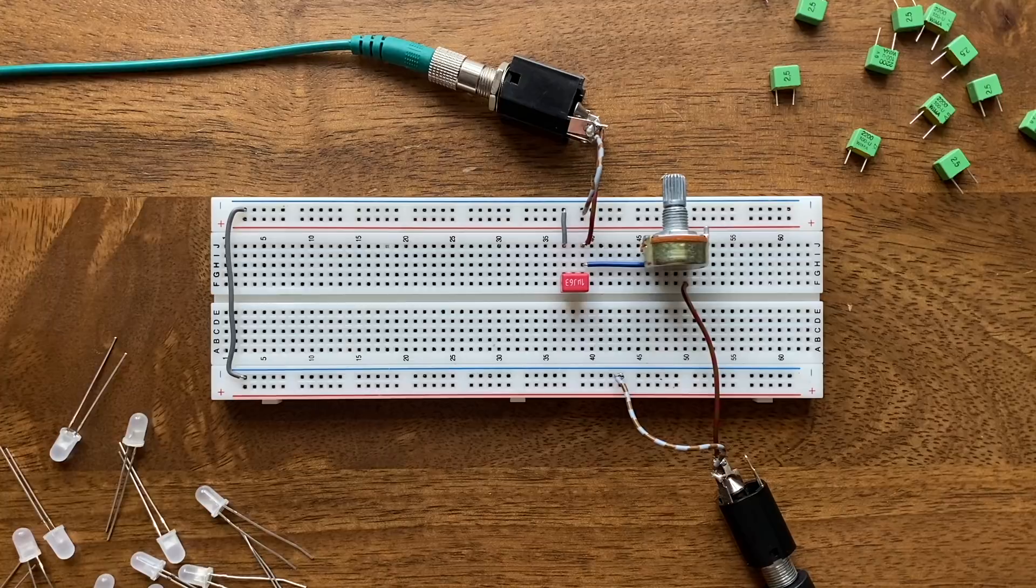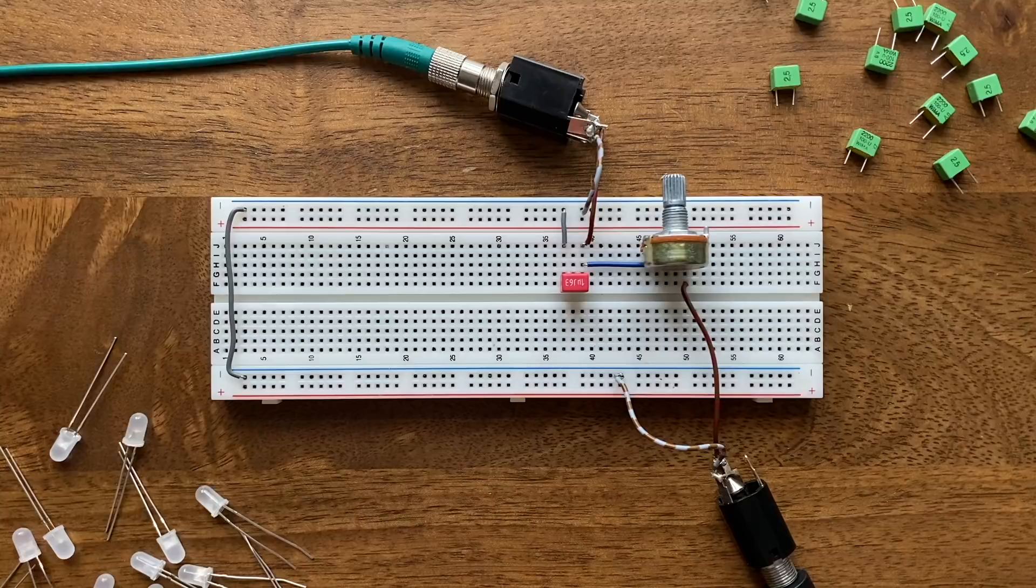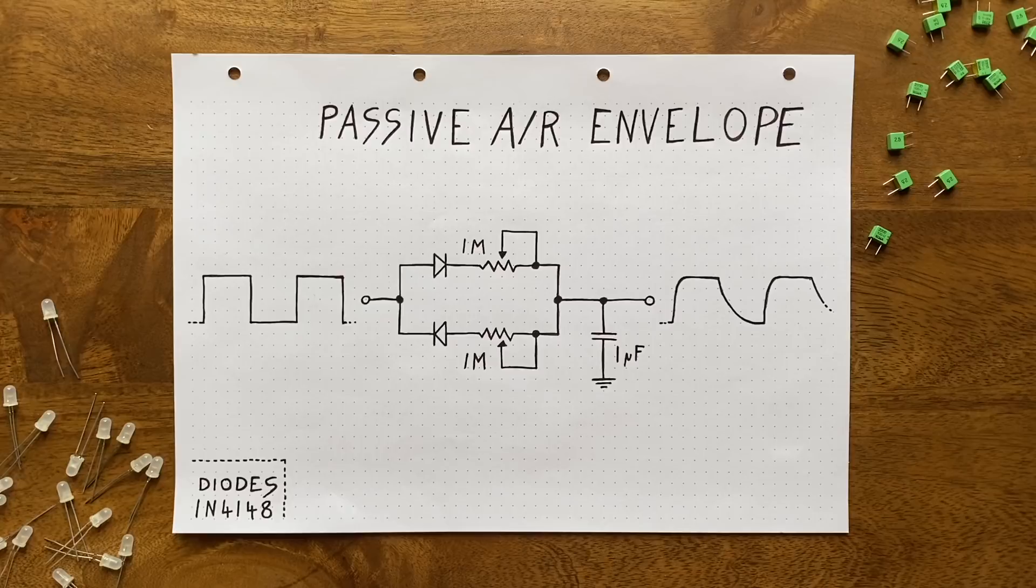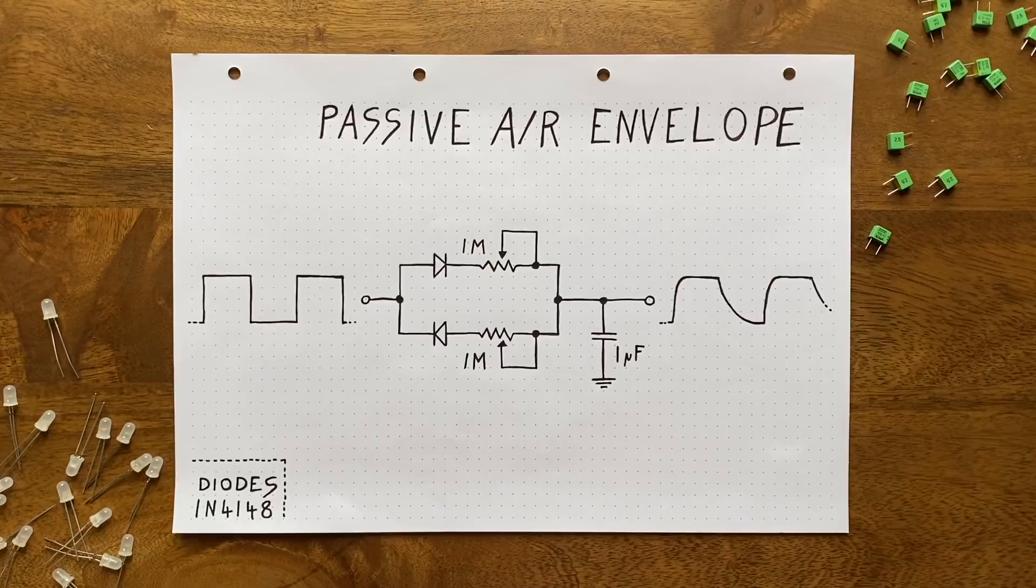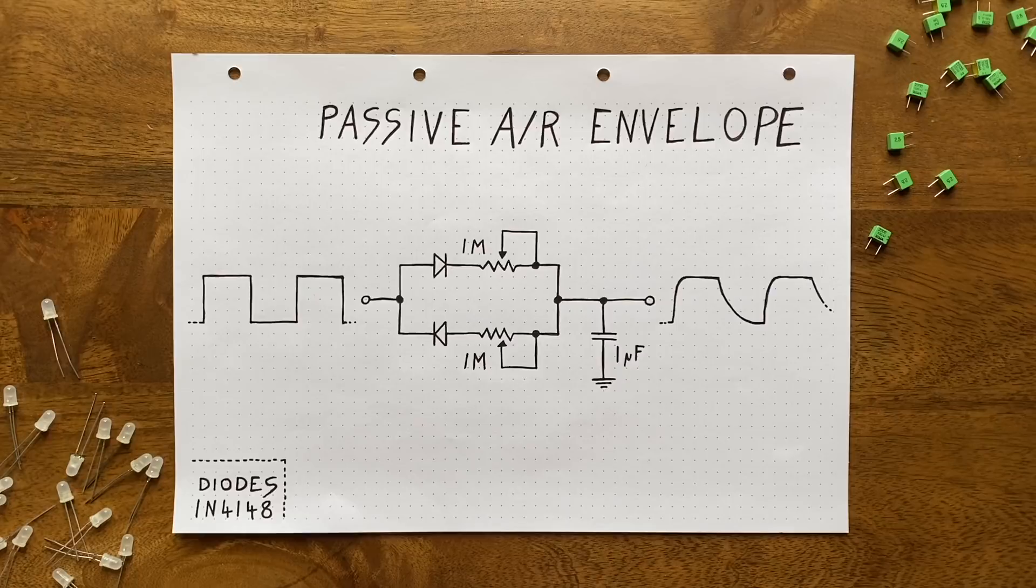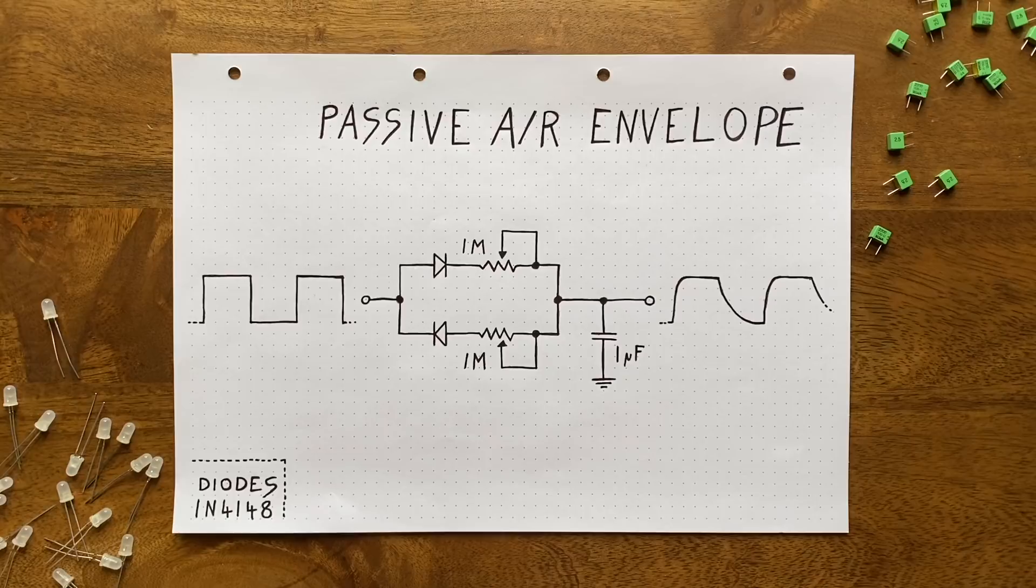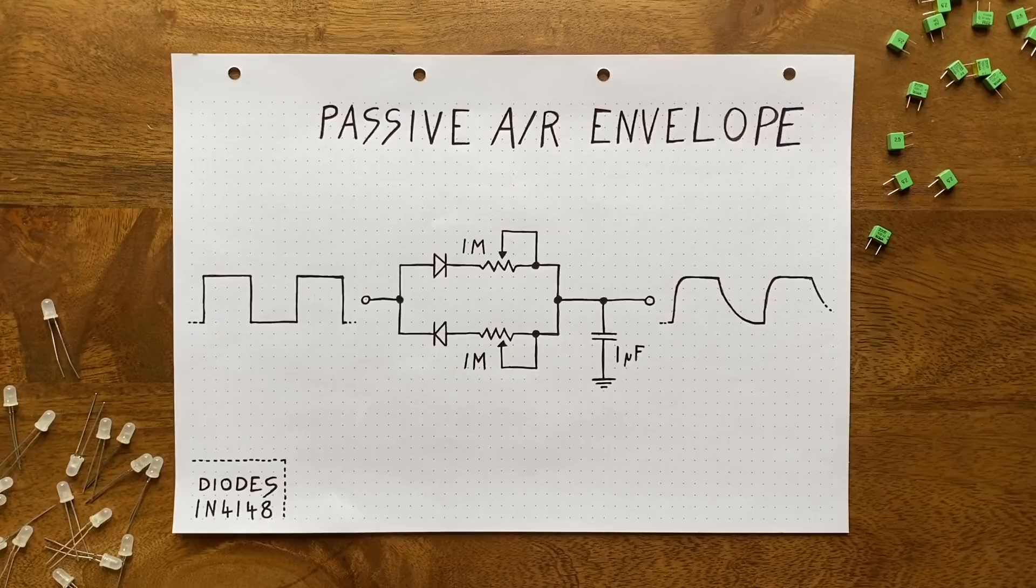The only problem with this is that the attack and release phases are not adjustable independently. Changing one will always also change the other. So how can we separate the two? It's actually really easy. All we need are two diodes and another one megaohm potentiometer. Here's how this works. Diodes, as you probably know, are basically one-way streets for electricity. So by putting two of them in parallel like this, facing in opposite directions, we are taking a two-way street and we're splitting it into two one-way streets.